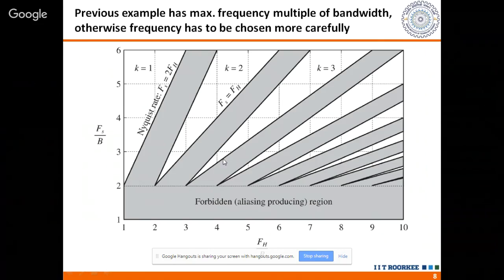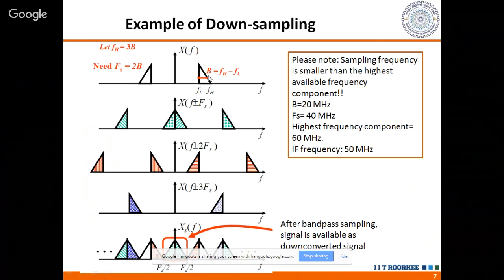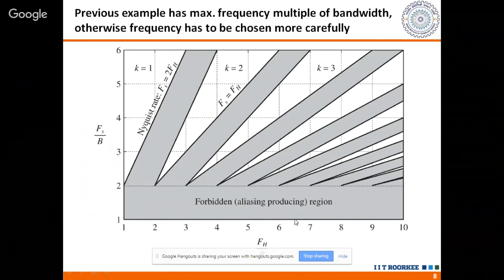This works when the maximum frequency component is a multiple of B, giving baseband replication. When it is not a multiple of bandwidth, we must carefully choose the sampling frequency by analyzing where components will lie and whether aliasing occurs. Communication books show a 'forbidden region' diagram for bandpass sampling that illustrates valid choices of F_s. Analytically, you can determine the sampling frequency yourself by placing aliasing components at plus/minus F_s, 2F_s, 3F_s, etc. Undersampling is useful in the case of bandpass sampling.